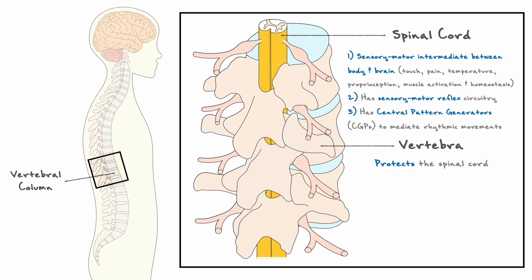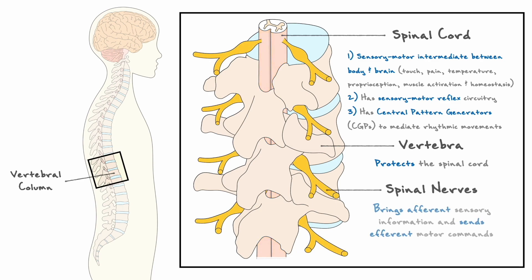To communicate with the rest of the body, the spinal cord is connected with the peripheral nervous system via the spinal nerves that bring sensory afferent information and send efferent motor commands. You will also notice from this figure that the spinal cord is highly bilateral. This means that when we divide our bodies in half, the two halves of the spinal cord mirror each other, and that also goes for the spinal nerves that go in and out of it.